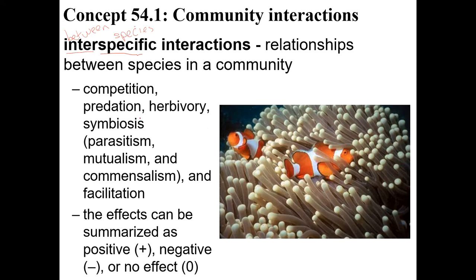Different interactions between different species can include competition between them when they fight for things, predation, herbivory, and symbiosis. Symbiosis could include parasitism, mutualism, or commensalism. And then there's also facilitation. For these, we're going to define them in terms of being positive for one or both species, negative for them, or having no effect on them.